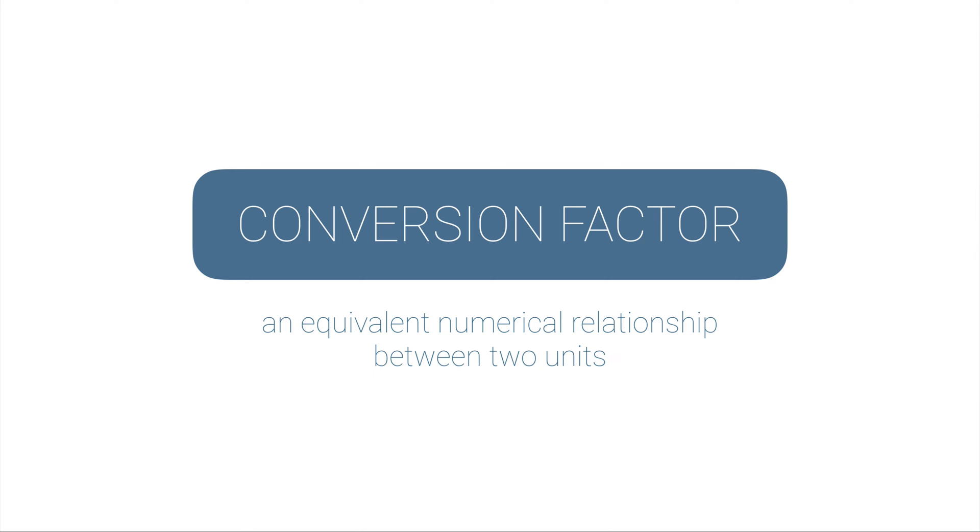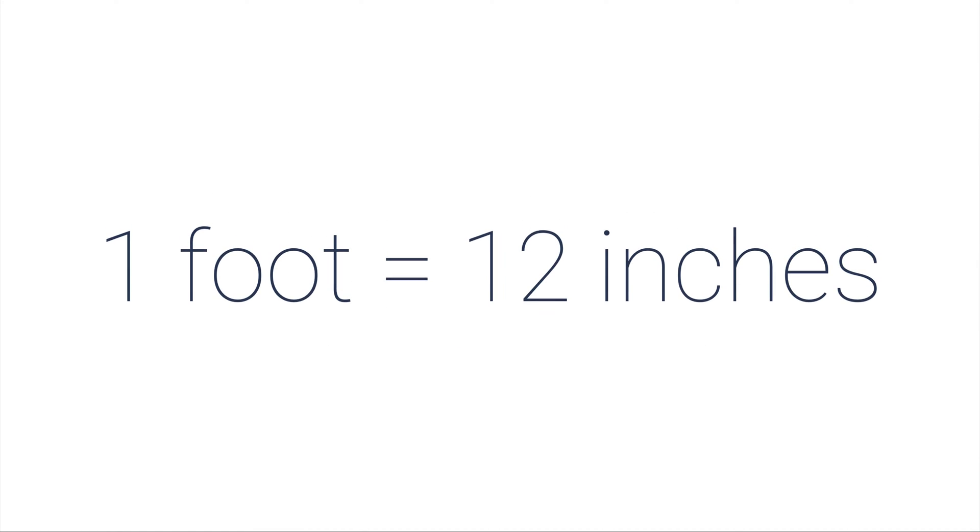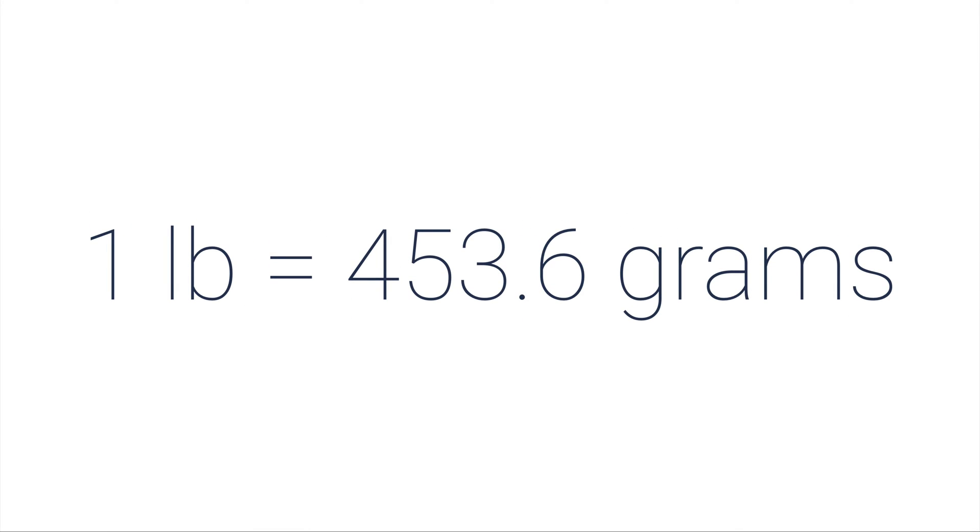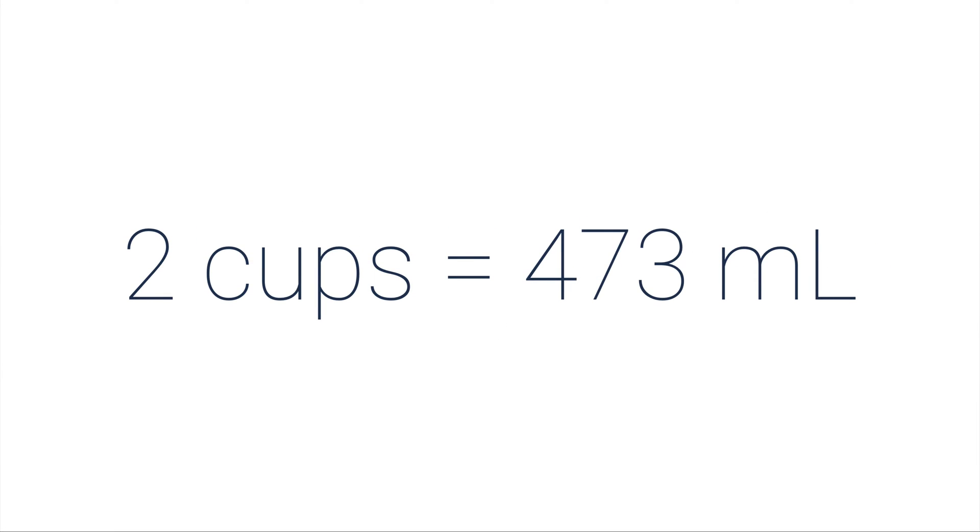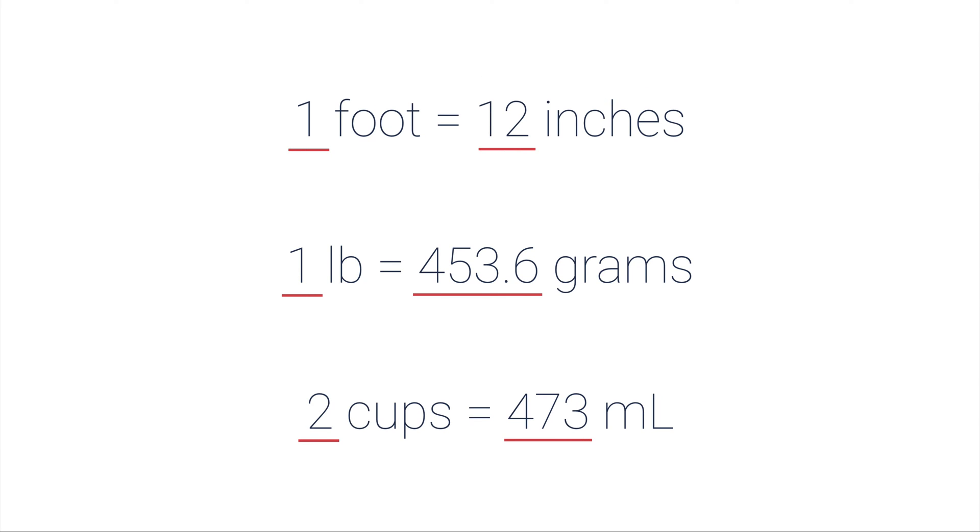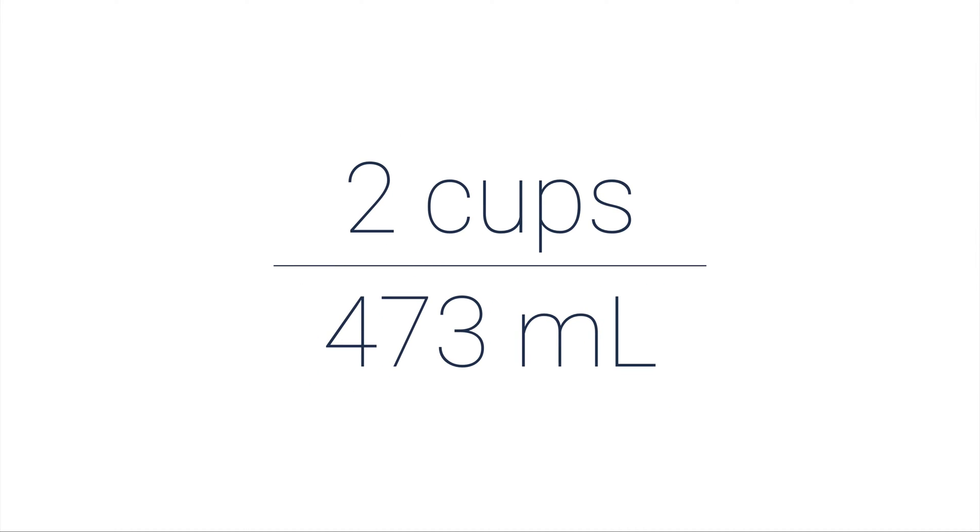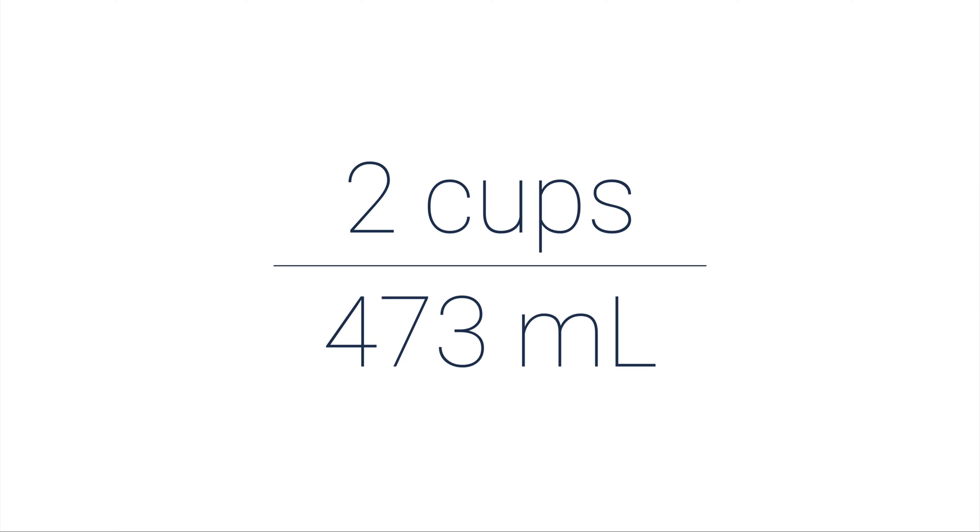And so conversion factors are equivalent expressions. They're equivalent numerical relationships between two units. Now you're familiar with conversion factors but I'll just give you a couple examples. One foot equals 12 inches, or one pound is 453.6 grams, or maybe you didn't know this one but two cups is equal to 473 milliliters. Although their numbers don't match, one isn't equal to 12 and two isn't equal to 473, overall their meanings are equal. One foot is equal to 12 inches and because of this relationship, even though the numbers are different but their meanings are exactly the same, we can use these interchangeably in a fraction because it's the same thing on the top of a fraction as it is on the bottom.